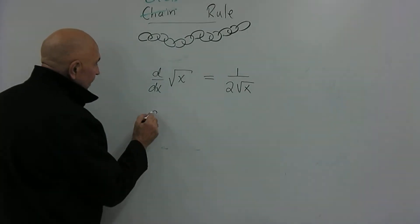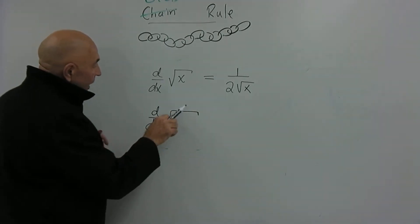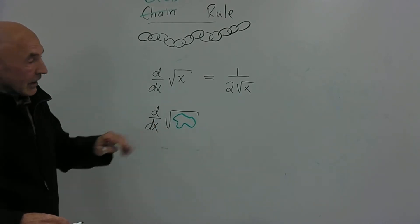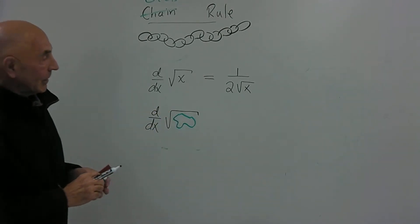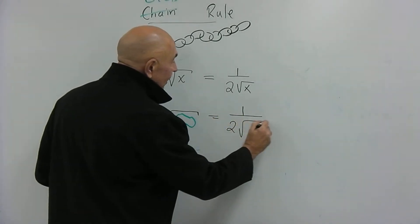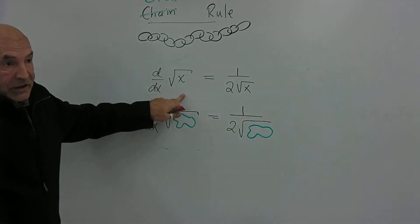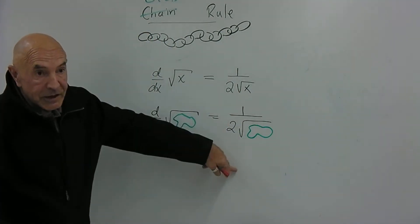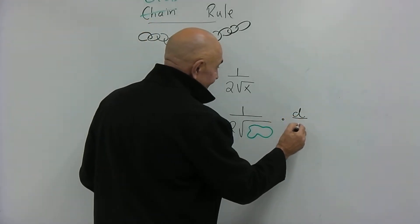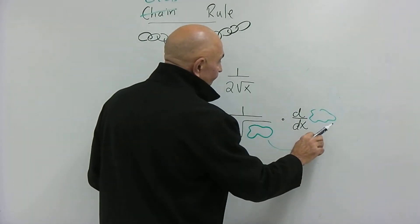So what's the derivative of the square root of a blob? The chain rule says: pretend the blob was just x. The derivative becomes one over twice the square root of the blob — just replace x with the blob wherever you see it — and then multiply by the derivative of the blob. Don't forget to do that, always.